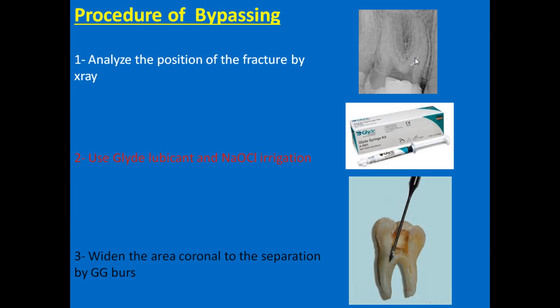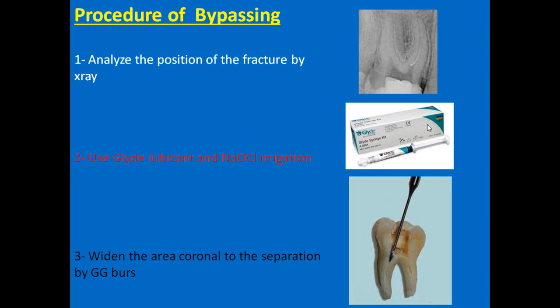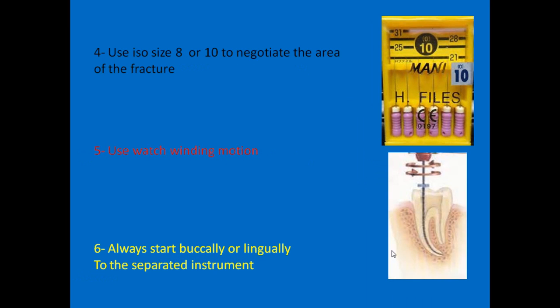Second, we have to use lubricant and irrigation. This is mandatory because we need all the lubrication so that our instrument can enter freely. Third, widen the area coronal to the separation using Gates Glidden burs. It is important to widen this area so that it will serve as a reservoir for the lubricants and will ease our visibility to the separated instrument.